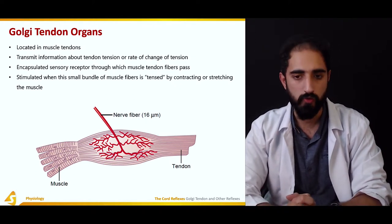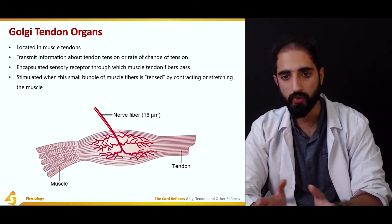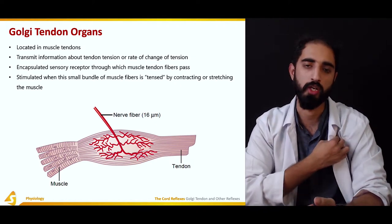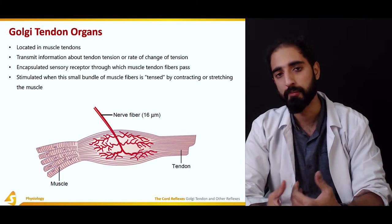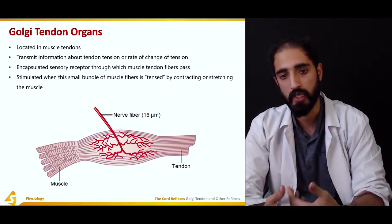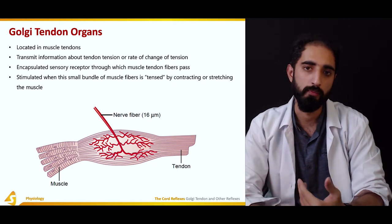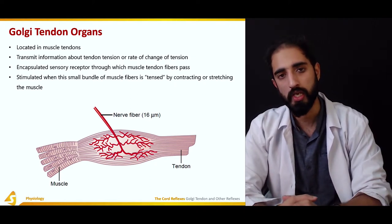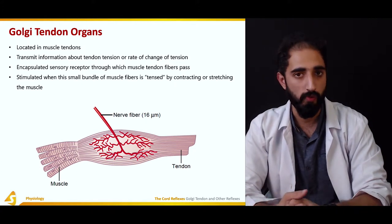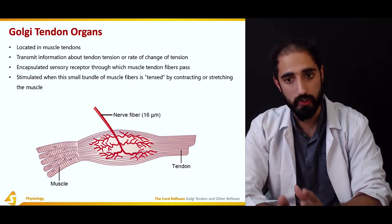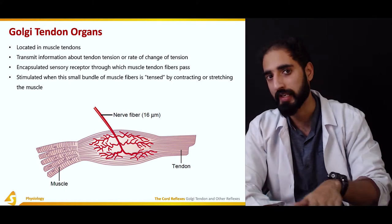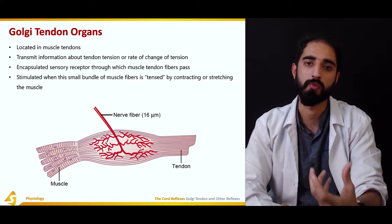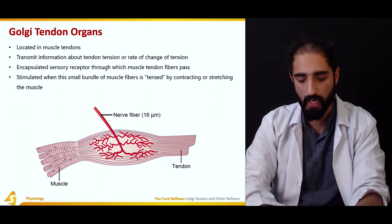When there is an isometric contraction, a static response is created by the Golgi tendon organ because it is sensing the increase in tension. When there is movement and a rapid change in tension, this is known as the dynamic response, and it only occurs when there is a change in tension. If there is a stationary tension, only the static response is present, not the dynamic response.